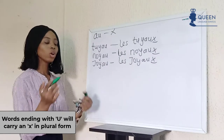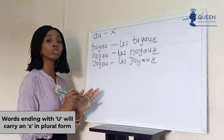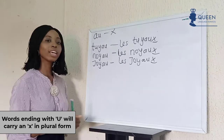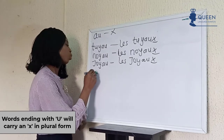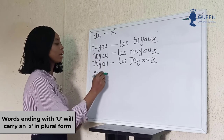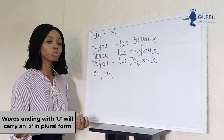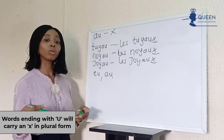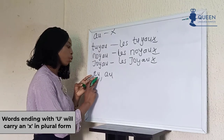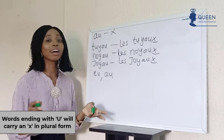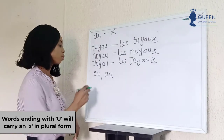Let's look at some exceptions to the rules. For words ending with -eu or -eau, there are some exceptions where they still have -s in their plural form instead of -x.